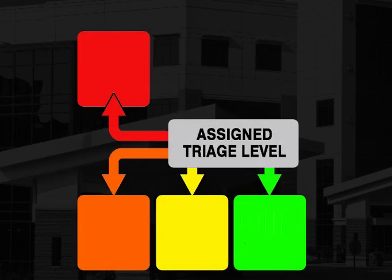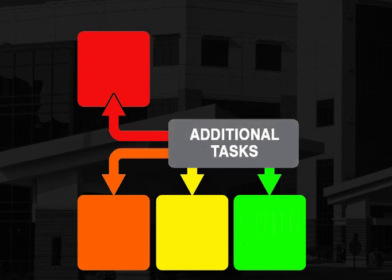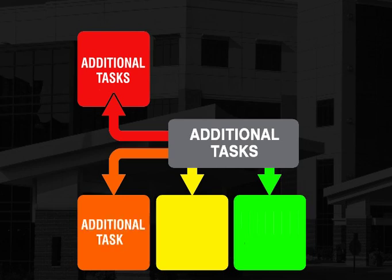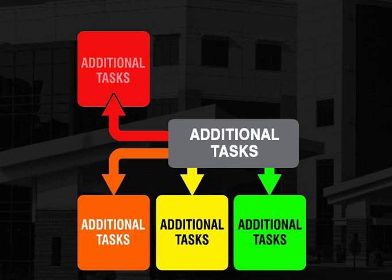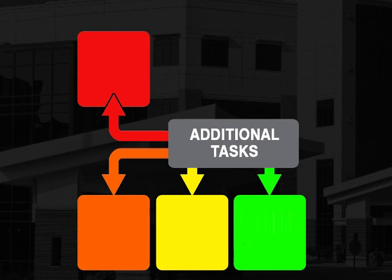Once a triage category has been assigned, there are some additional tasks that need to be initiated in the triage area. These are different to the additional investigations, as they do not change the priority level of the patient. Once additional tasks have been completed, the patient should be handed over. And if the patient waits longer than permitted, they should ideally be re-triaged.